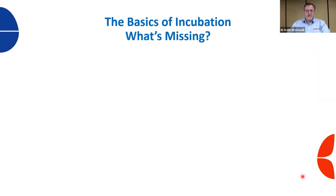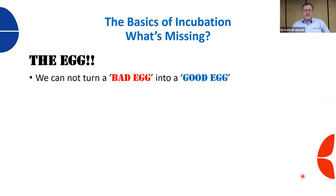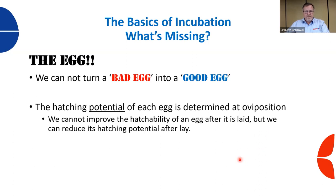However, what are we actually missing from those four basics? Probably the most important factor of incubation and being a successful hatchery is the egg itself. We cannot turn a bad egg into a good egg - we cannot hatch an infertile egg. If we're given a poor quality egg, it makes it difficult to hatch as well. This is the fuel - one of the most important things for our hatchery that will allow us the possibility of running a good, successful hatchery.